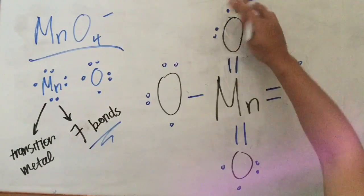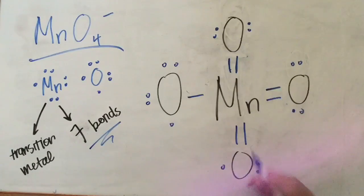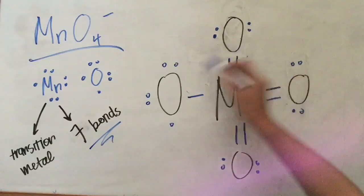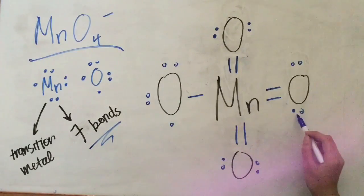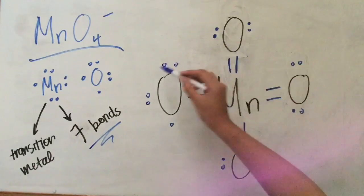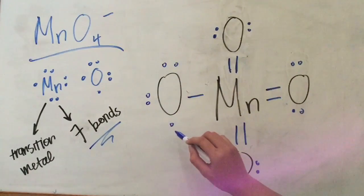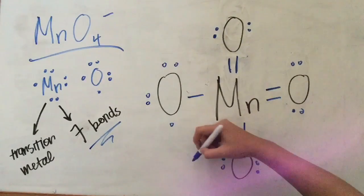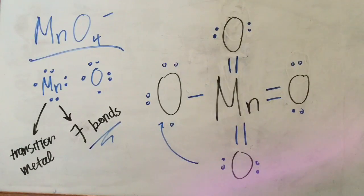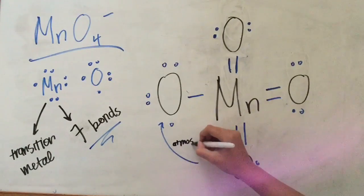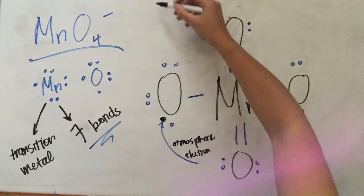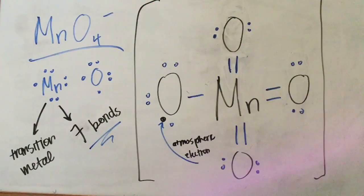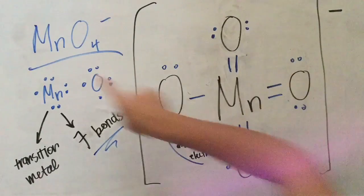Making sure each atom keeps the same amount of valence electrons, I'm going to switch the places of the valence electrons to form pairs, making the diagram look neater. Now that our structure is refined and has 7 bonds, I'm going to go back and check if each atom fulfills the rule of octet. Because manganese is a transition metal and does not follow the rule of octet, we will only be worrying about the oxygen atoms. There are 8 valence electrons in 3 of the oxygen atoms, but only 7 in the last oxygen atom. To complete this last oxygen atom, I'm going to add an atmospheric electron. Adding this atmospheric electron is what gives this whole molecule its negative charge.